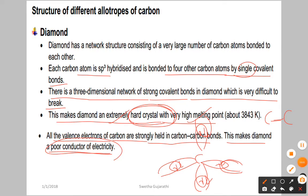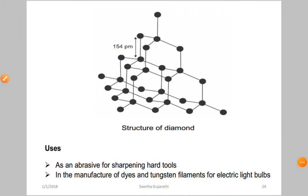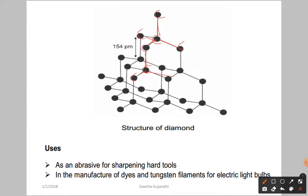You can see in the structure: one carbon atom overlaps with another, and that with another, and so on. On the back side there is another carbon atom as well, forming the tetrahedral structure. This is the structure of diamond.